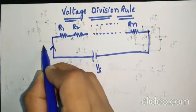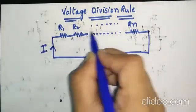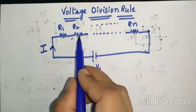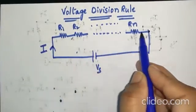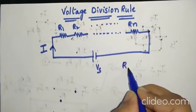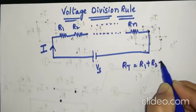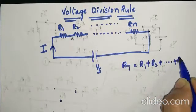Then a current I will circulate through the circuit. Since all the resistors are connected in series, the total resistance will be R1 plus R2 plus and so on plus Rn.